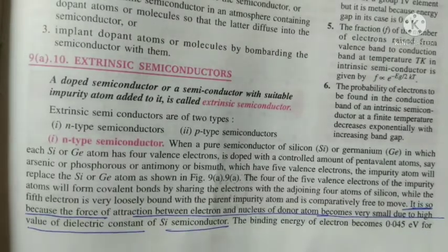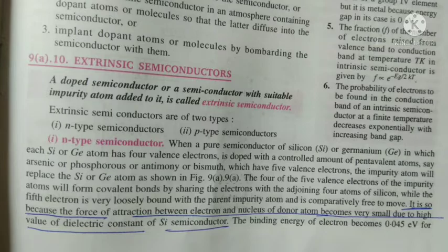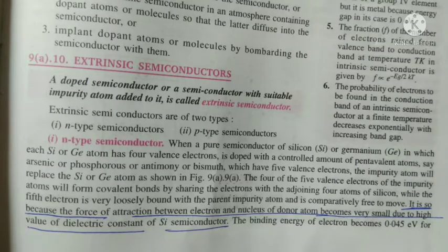...while the fifth electron is loosely bound with the parent atom or impurity atom, which is comparatively free to move.